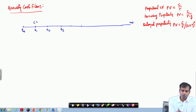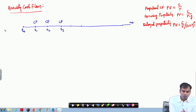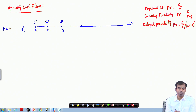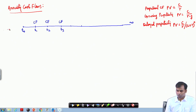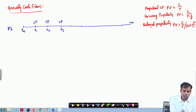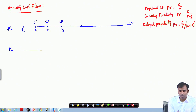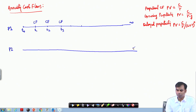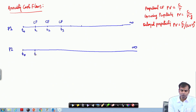Cash flows are generated along this timeline. Let us call this situation Project 1, a simple perpetuity. Now let us define Project 2 with a similar timeline for perpetuity, starting at T1, T2 and so on.